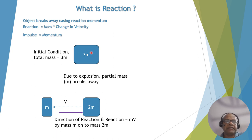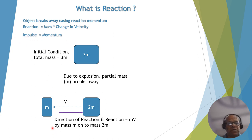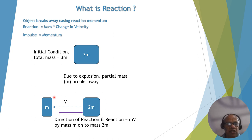Let's understand reaction with an example. Initially, there is a mass of 3m. Due to an explosion, a partial mass m breaks away. Now the remaining mass is 2m. The broken piece has mass m and velocity v, so its momentum is m×v. The direction of reaction on the 2m mass is opposite to the velocity v of the ejected mass m, and the magnitude is m×v.